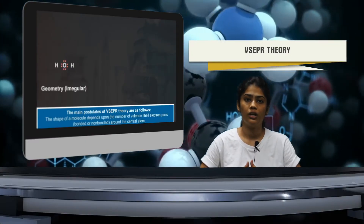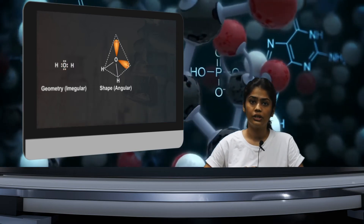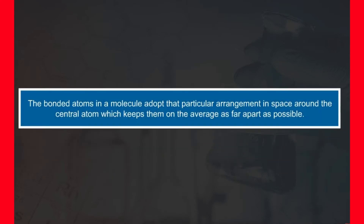The next topic is VSEPR theory — Valence Shell Electron Pair Repulsion Theory. Since Lewis symbols were unable to explain shapes of certain molecules, VSEPR theory was introduced. The basic idea of this theory is that bonded atoms in a molecule adopt that particular arrangement in space around the central atom which keeps them on average as far apart as possible.